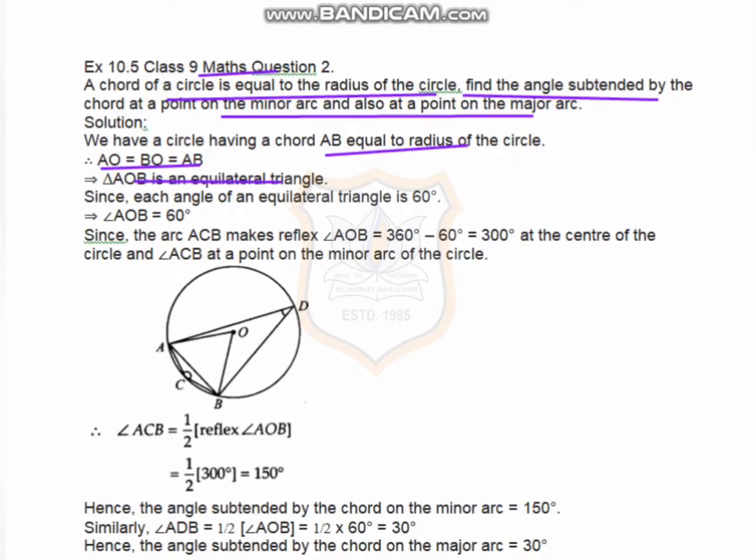So, AOB is an equilateral triangle. We know that an equilateral triangle has all sides equal, so angle AOB equals 60 degrees.